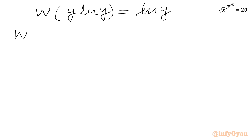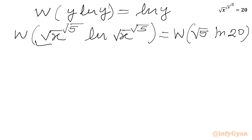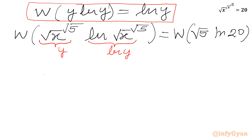Writing our equation: this was W((√x)^(√5) · ln((√x)^(√5))) = W(√5 · ln 20). You can see that if y = (√x)^(√5), then we have y · ln y on the left. So after applying the Lambert W function, the LHS becomes ln y, which is ln((√x)^(√5)).